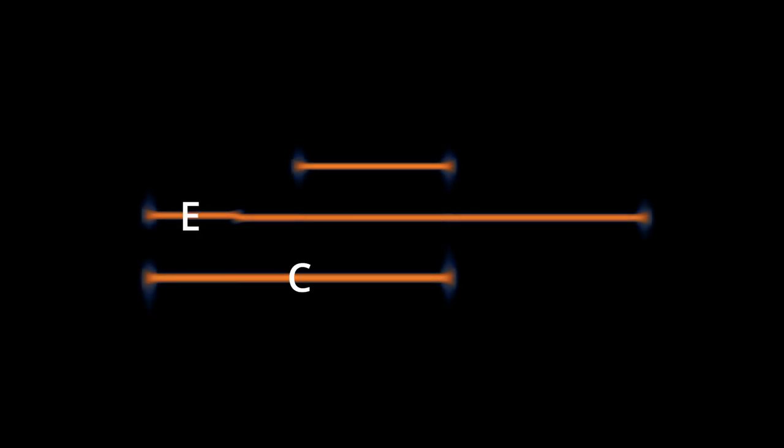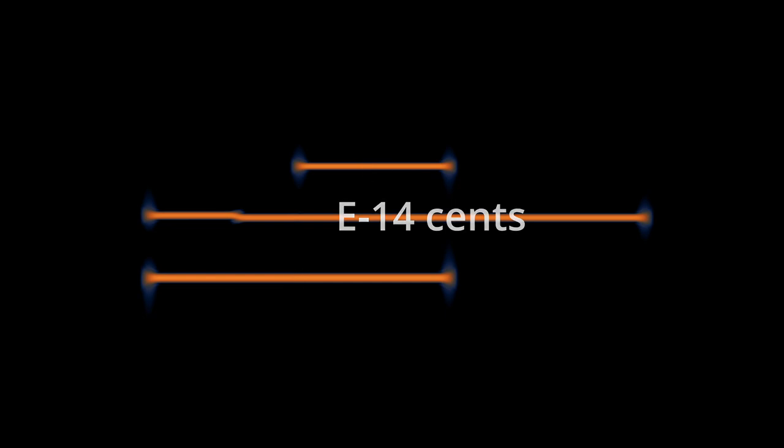Cents divide each of the twelve equally spaced notes into a hundred smaller divisions, which is where I came up with the 1,200 divisions of the octave from earlier. That 5-to-4 ratio turns out to be almost exactly fourteen cents flat from the twelve-tet major third. Now that our major third is fourteen cents flat, let's remove the other notes and keep that one sustained. Then let's build another major chord, making that fourteen cents flat note the root.